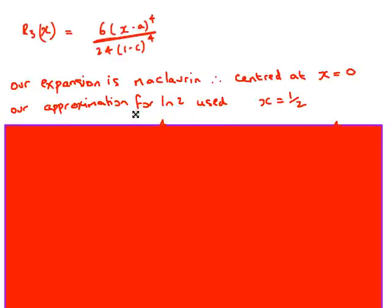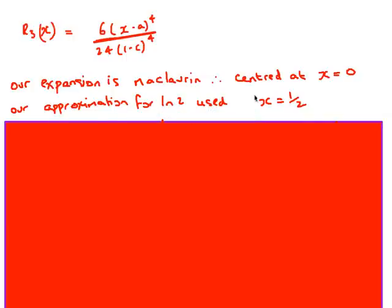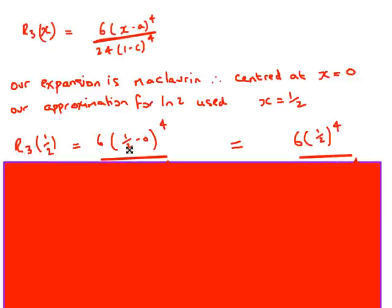The next thing is to try and get rid of this x and a. The expansion was a McLaurin, which was centered at x equals 0, and our approximation used x is a half. So these are the two values that we're going to substitute in for x and a. We replace the x with the value that we used, which was x is a half, and we replace a with the value where it's centered, which is 0.